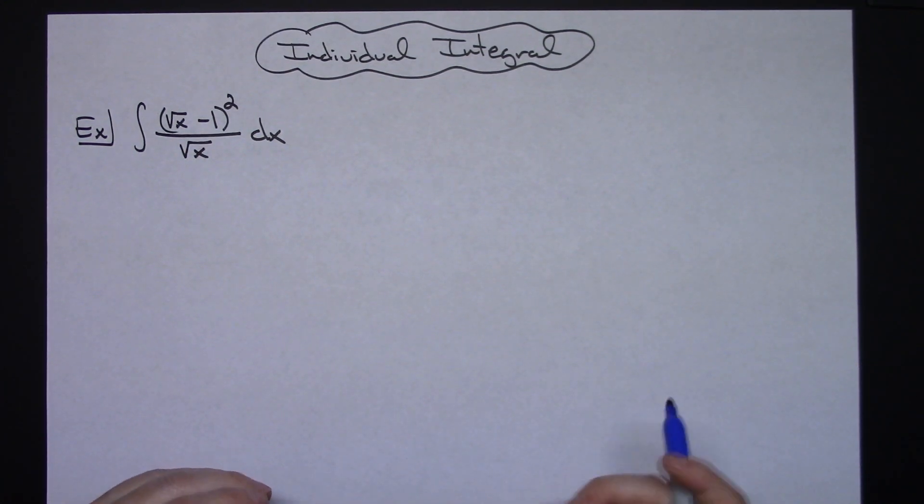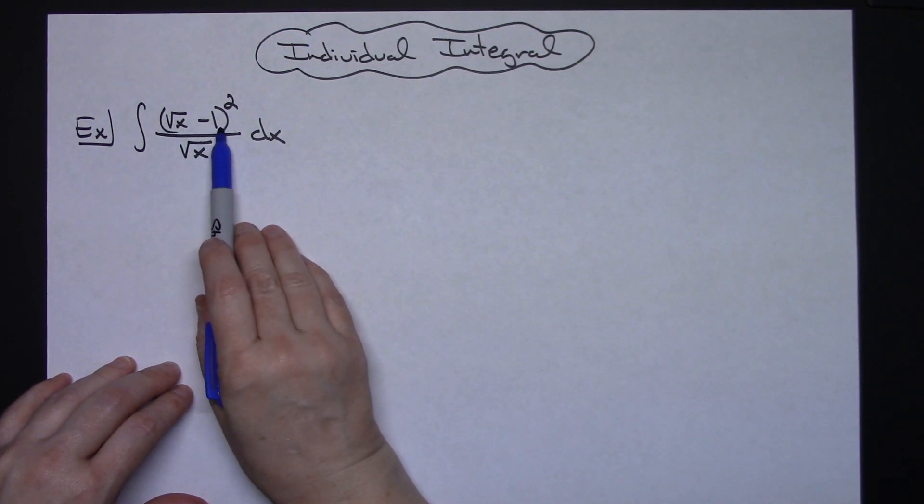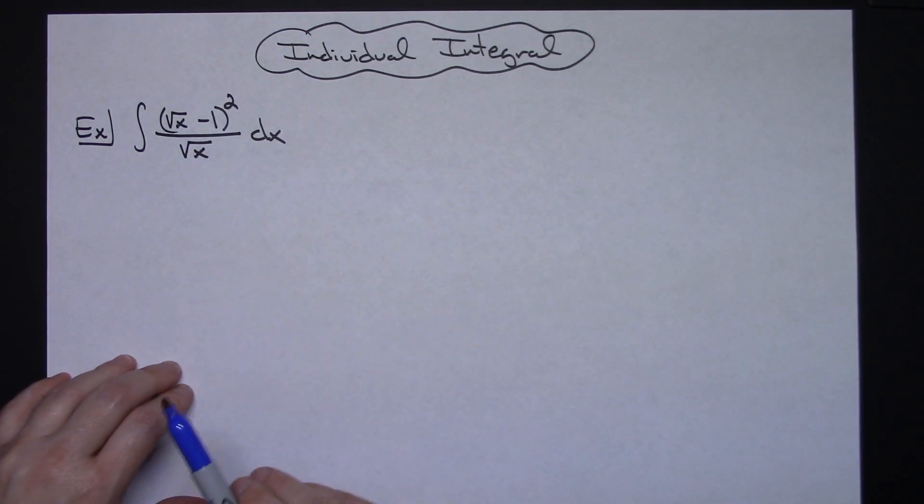In this video I'm going to work out an individual integral. We're going to take a look at the integral of the square root of x minus 1 quantity squared all over the square root of x dx.